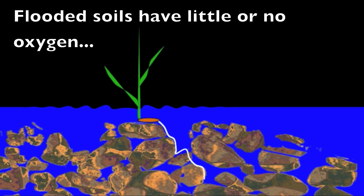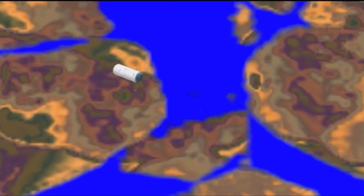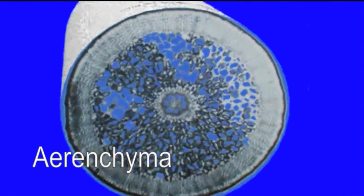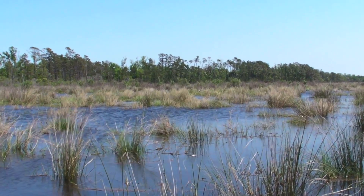Thus flooded soils have little or no oxygen. Plants tolerate such low oxygen conditions by developing special air space tissue inside the roots called aerenchyma, which creates an internal aeration pathway that allows oxygen in the atmosphere to reach the roots. This is one mechanism that allows plants to survive flooding.